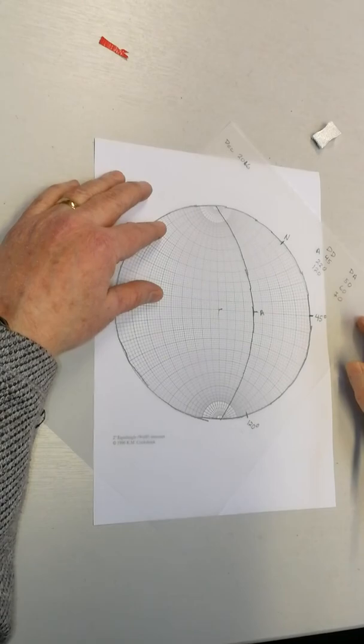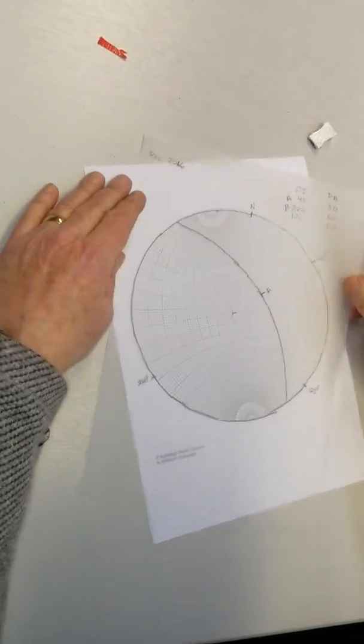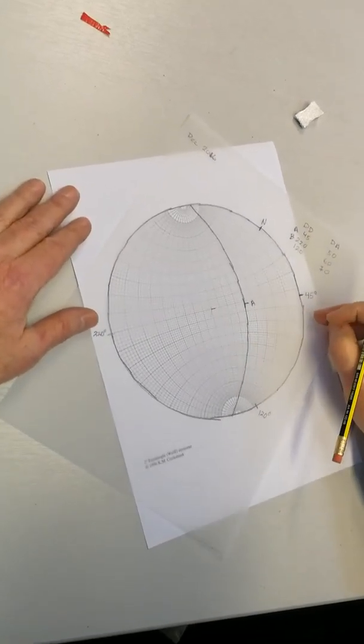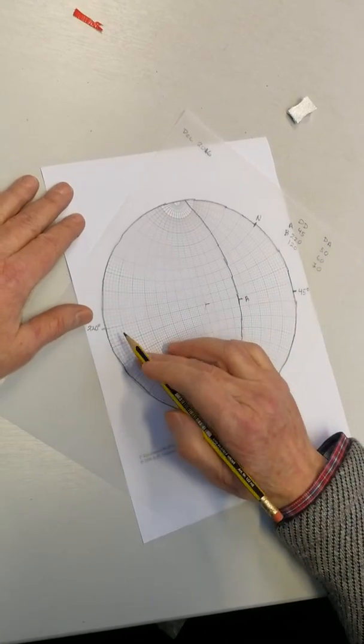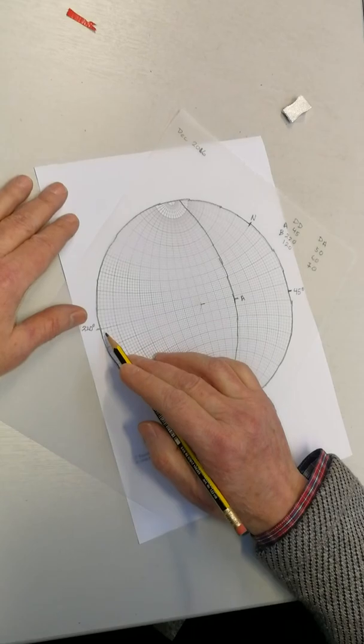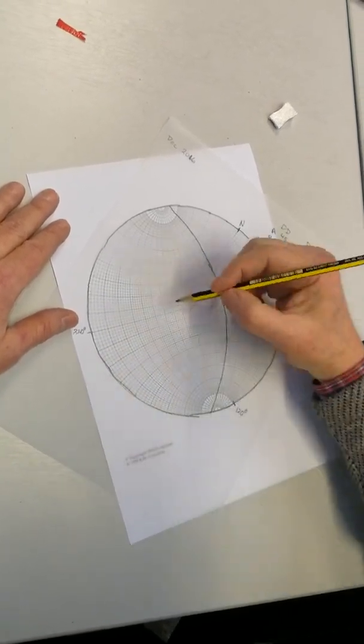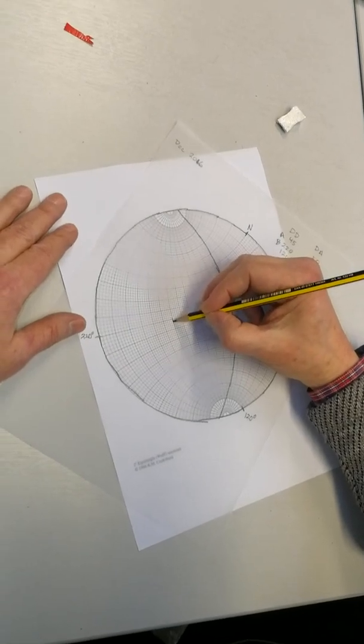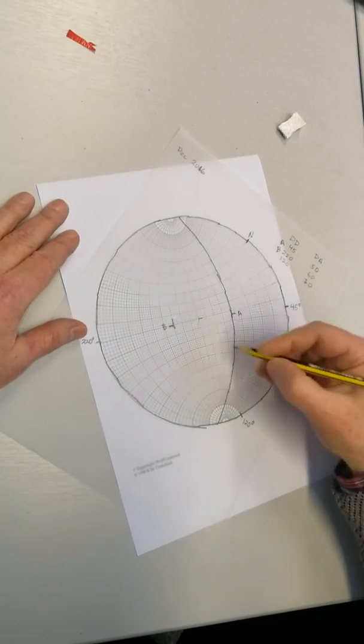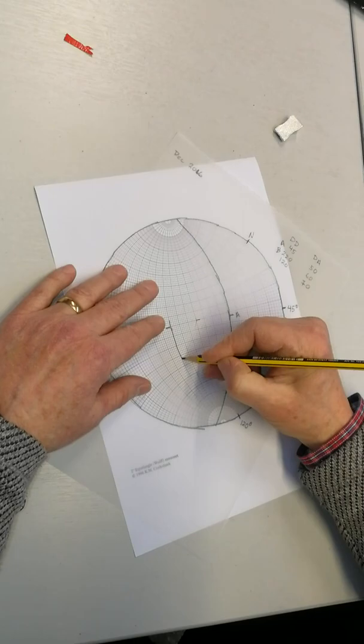The next one, which we'll call B, is the 220 and 60. So I find the 220 line. You do it on the east-west line here. I'm going to go over to the western side and now I'm counting in 60 degrees, so 10, 20, 30, 40, 50, 60. I'm going to put that there and identify it as B, and then I'm going to trace out the great circle.